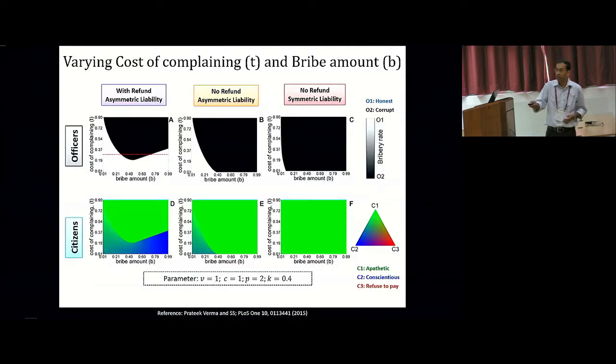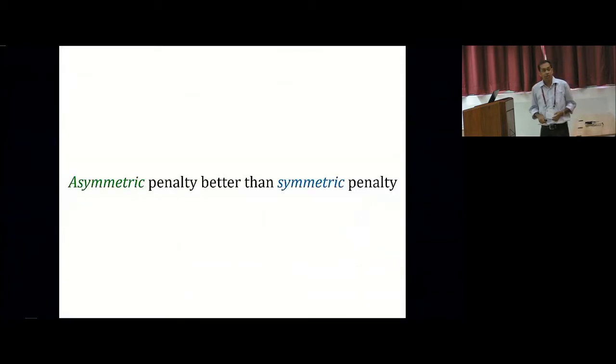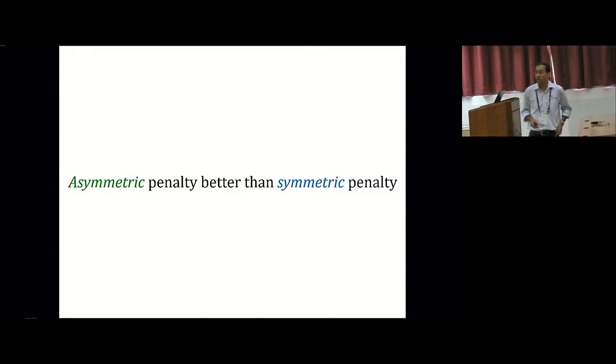You can see that there's a strong correlation between the fixation of honest officers and complaining citizens who are either conscientious or those who refuse to pay, especially in the regime of large bribe amount. So this seems to suggest that Basu's proposal of asymmetric penalty does indeed make a difference in reducing the number of incidents of harassment bribery, but is this really true for other situations where the strategy update occurs in a slightly different way?